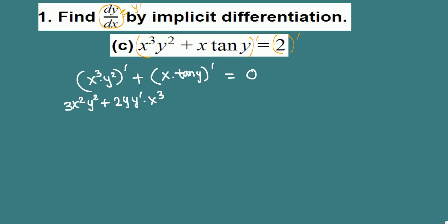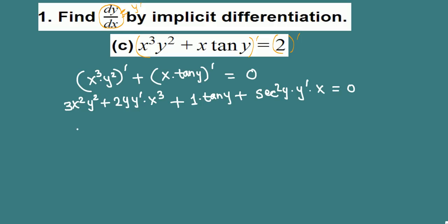For the second term we apply the product rule again: derivative of the first factor x is 1 times the second factor tangent y, plus derivative of the second factor — derivative of tangent y is secant squared y times y prime — multiplied by the first factor x. That equals zero.